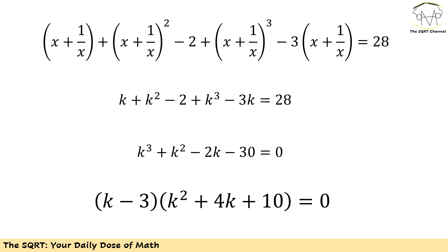Basically I'm going to replace x plus 1 over x with k, then I will have k plus k squared minus 2 plus k cubed minus 3k is 28. Let's rearrange it a little bit. I will have k cubed plus k squared minus 2k minus 30 is 0.